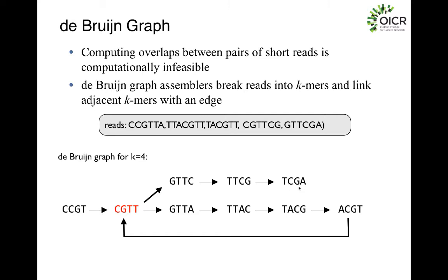So once you have your set of k-mers and the set of reads you actually want to deal with, you can start doing your draft construction. In this example, reads are six bases long for convenience and the selected k-mer is four. You lay out all of your k-mers on a graph and then, using the reads, you see how each k-mer connects to one another — so 'CCGT' and 'CGTT' will connect to each other, and you do this for every single read independently, building nodes that connect all your k-mers together into an initial graph layout.